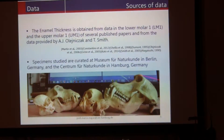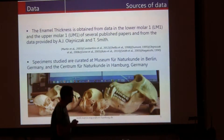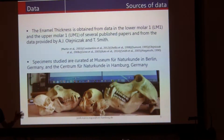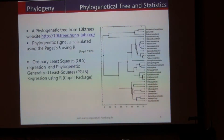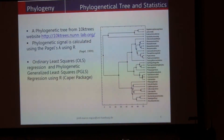I am using enamel thickness data from different papers, and also from data that Professor Oifisek and Professor Smith sent me. I picked up all the data and I am taking the average of each specimen. The specimens studied are from Berlin and Hamburg. I am using a phylogenetic analysis, calculating the phylogenetic signal using the pagel's lambda, and fitting all the data using ordinary least squares regression and phylogenetic generalized least squares regression.